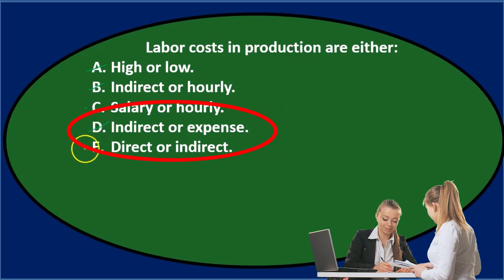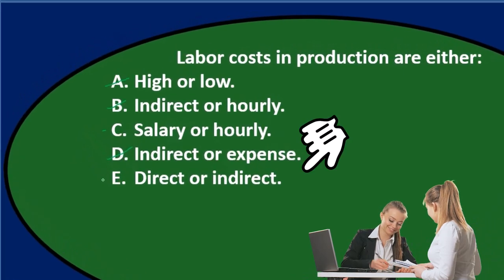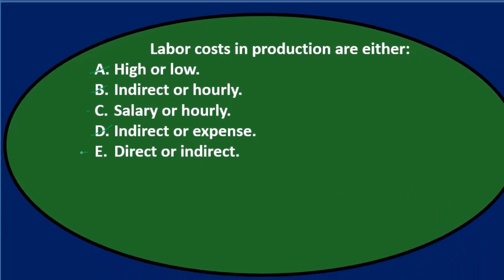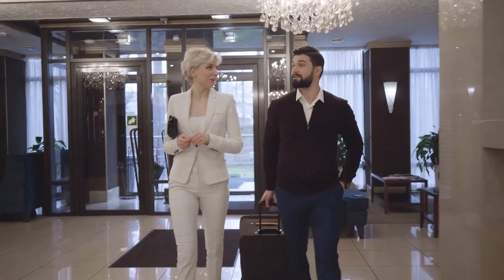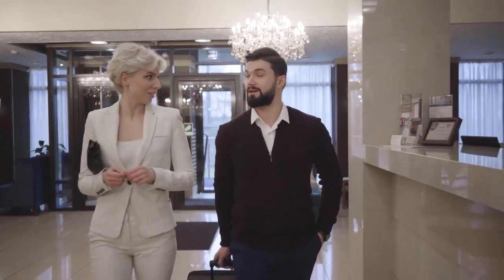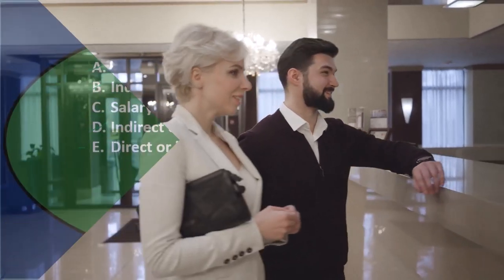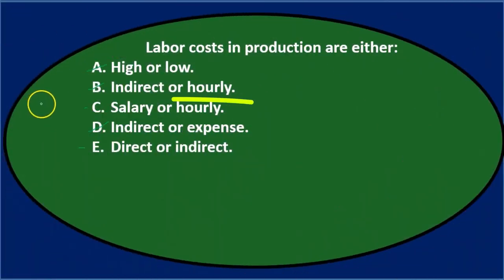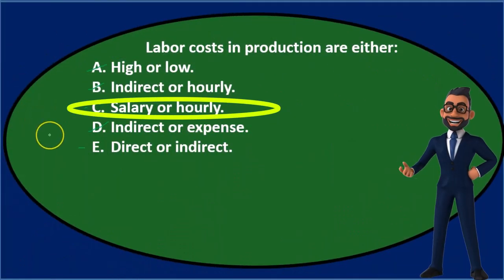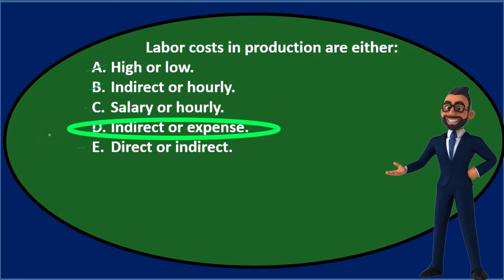Option E says direct or indirect, and those two terms ring together — direct or indirect sounds like they go together. So I'll keep that. We're now down to C and E: either C, salary or hourly, or E, direct or indirect.